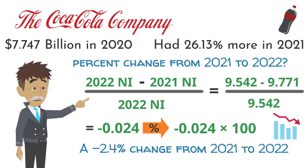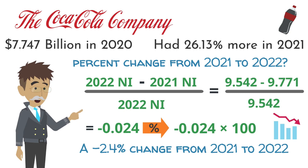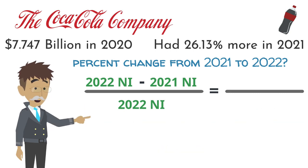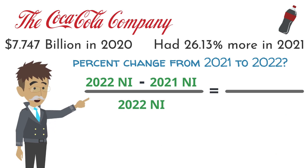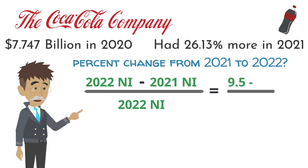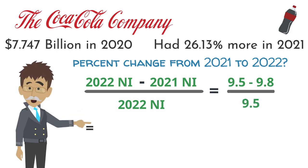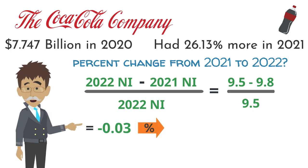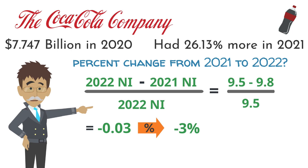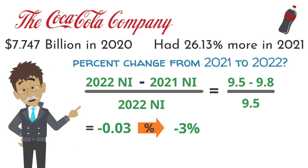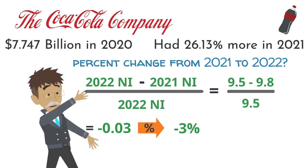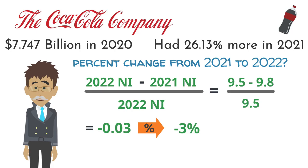This problem is not a quick check using estimation, but it will still let us know if our initial calculation is close. I will round the 2022 and 2021 net income to the tenths place — 9.5 and 9.8 respectively. This gives 9.5 minus 9.8 divided by 9.5, simplifying to negative three hundredths, or negative three percent. Our estimate is close to our answer, which is most likely correct. The numerator is smaller in our estimation, meaning this estimation is a little too big. Estimation is often a quick way to determine what our answer should look like with less messy numbers.